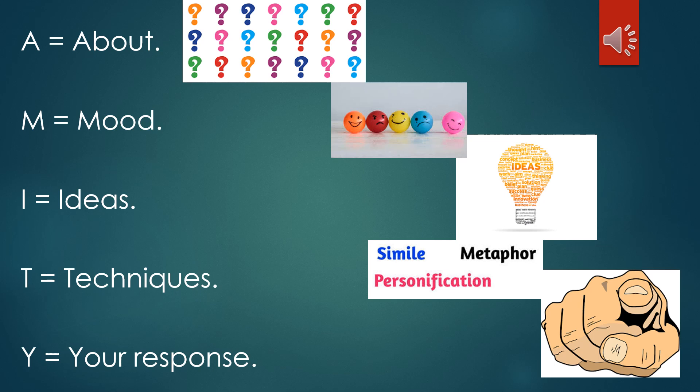AMITY stands for five letters, and each letter stands for a different method that you are going to use to explore your poem. First of all, you need to read your poem through slowly and carefully, trying to understand the meaning of the poem — in other words, what the poem is about. So your A is for about. You need to try and work out what is happening.